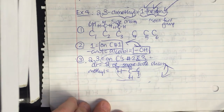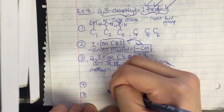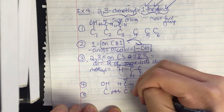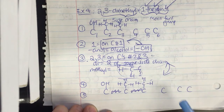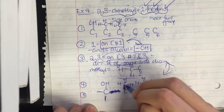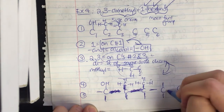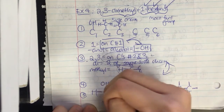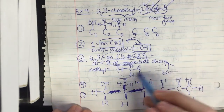In step 4, I draw four bonds maximum around each C. Carbon 1 has one bond, so I draw three more. The carbon with OH has bonds already counted; I draw two more at bottom and right. I continue for each carbon, drawing four bonds maximum. Finally in step 5, I put H's in all the empty spots. This is the structural formula for 2,3-dimethyl-1-hexanol.